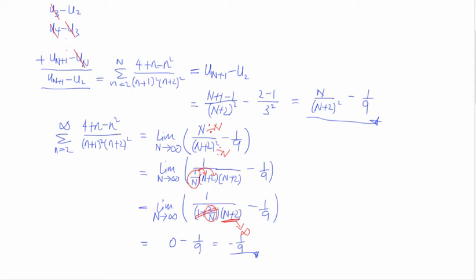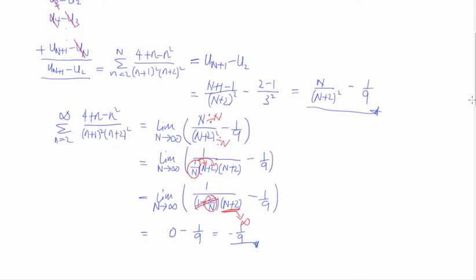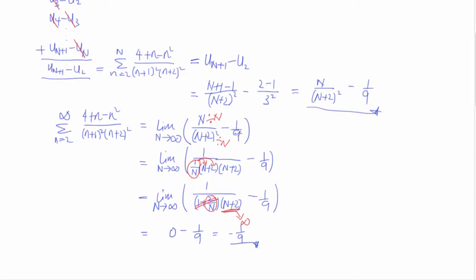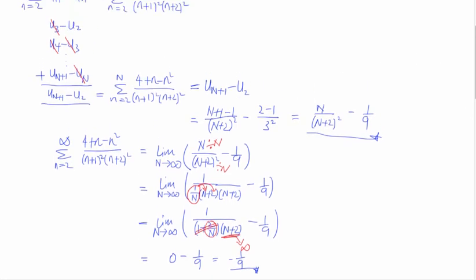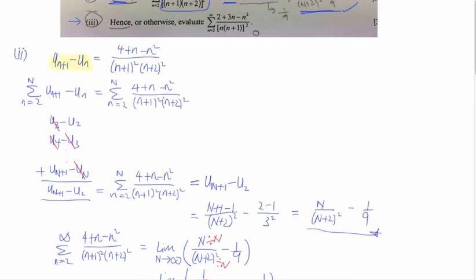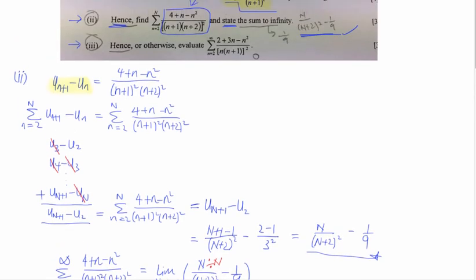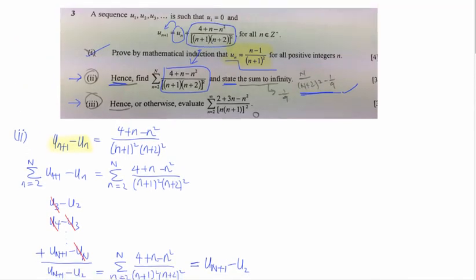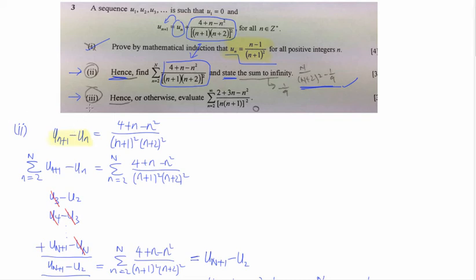So that's it for the 'state' part. For one mark you can simply use your GC — look at the table as n tends to infinity. Now let's look at the entire question one more time and attempt part 3. Part 3 says 'hence or otherwise evaluate' a new series — it's a common style of question that many students actually get wrong.